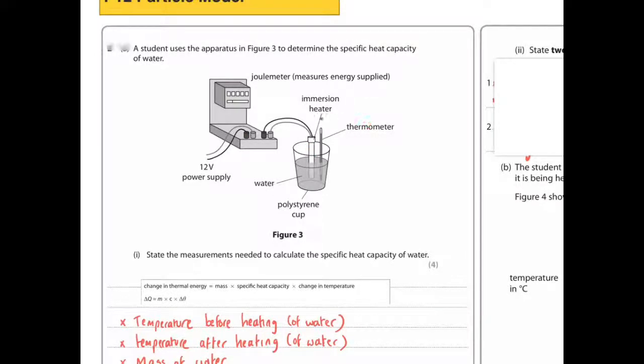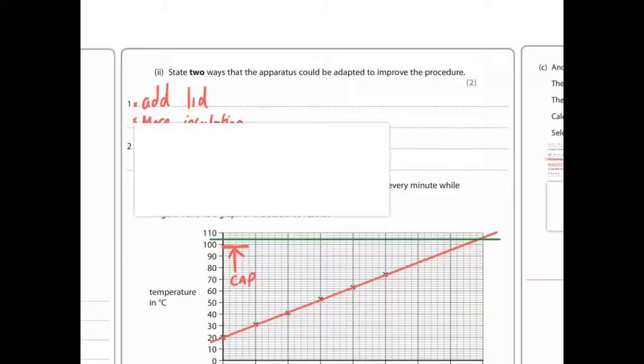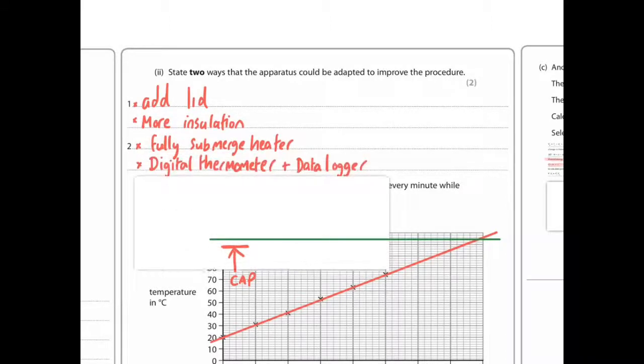Or you could use a thermometer, it isn't always very accurate, it's hard to read, you can make mistakes, you could use a digital thermometer over here, or a temperature probe with a data logger. So add a lid or more insulation, fully submerge heater, a digital thermometer, and data logger would do.